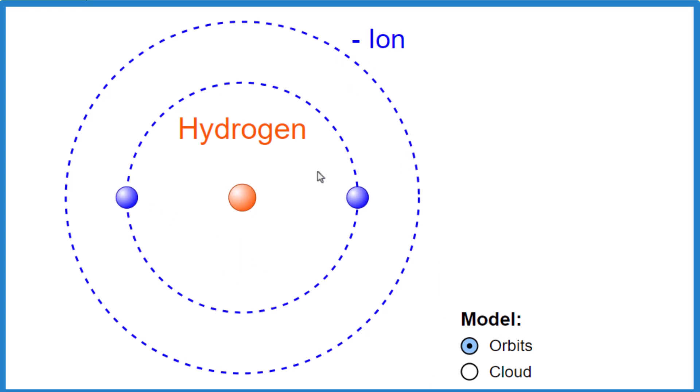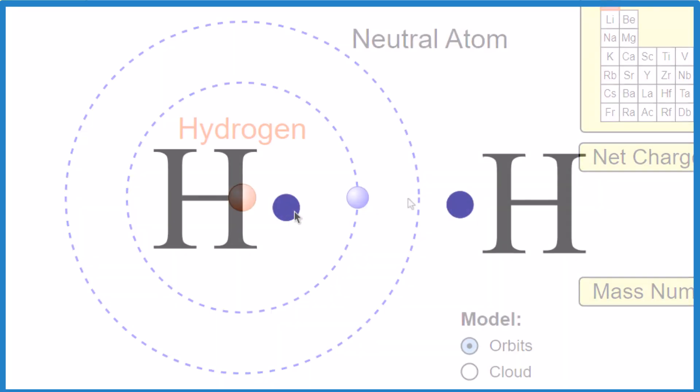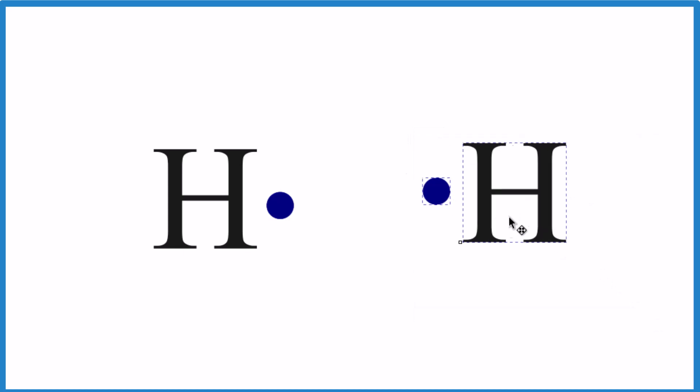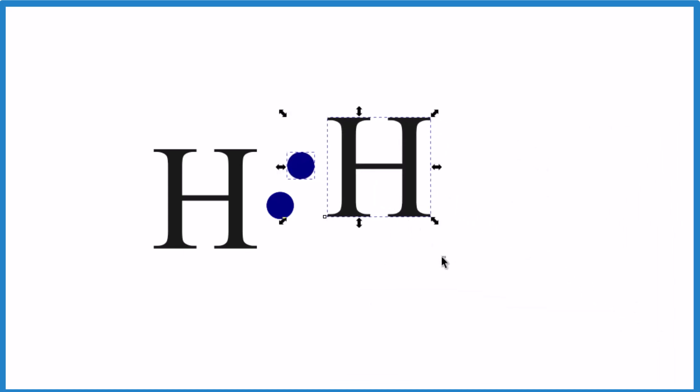So hydrogen will bond to get 2 electrons and fill this highest energy level. So right now, we have 1. So 2 hydrogen atoms, they come together. Each one has 1 valence electron. When they come together, they're going to share that valence electron.